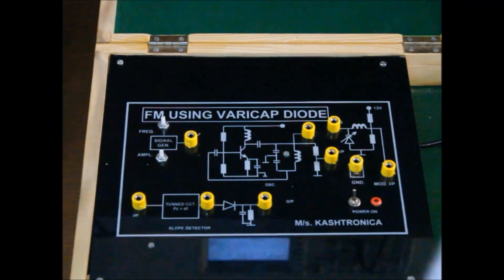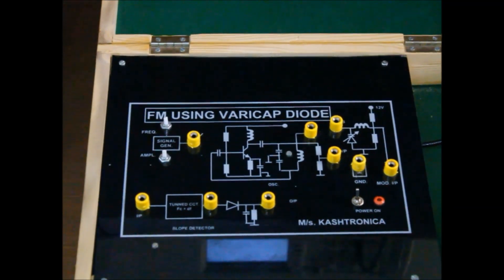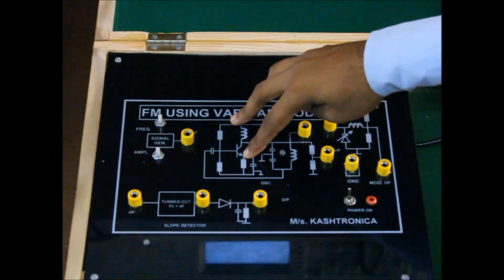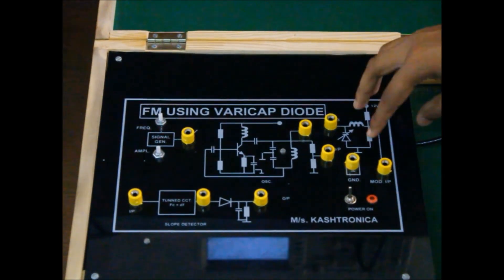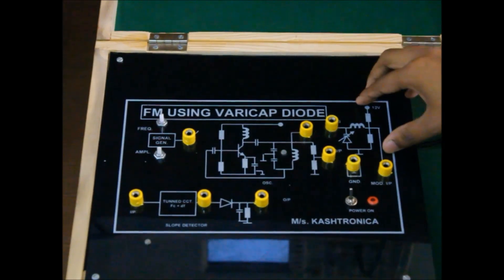Hello everyone, today we will be doing FM using Varicap Diode. Here a Varicap Diode modulator is used and a LC tank circuit is used. This LC tank circuit is nothing but a Colpitts oscillator.